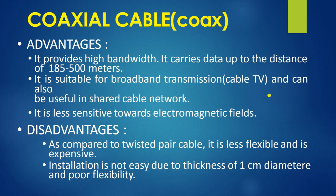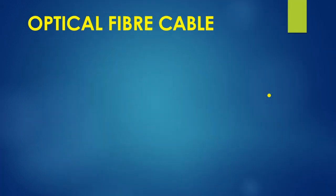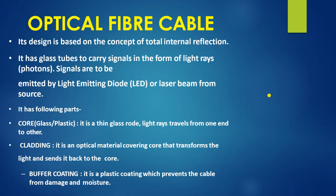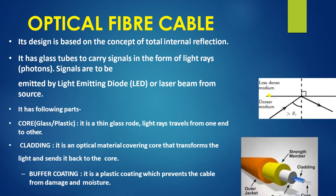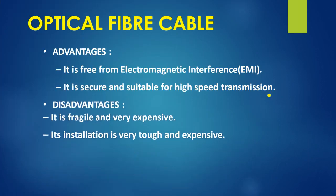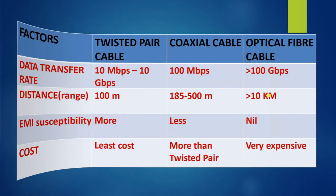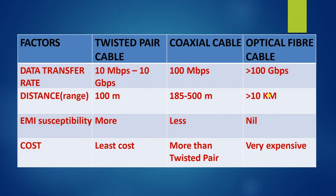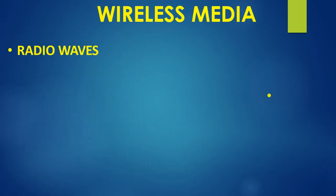Optical fiber cable is the best cable because data is transferred in the form of light rays. Signals are emitted by LED or laser beam from the source. Here is a diagram of the optical fiber cable. These are its advantages and disadvantages, and a comparison table between twisted pair, coaxial cable, and optical fiber cable.